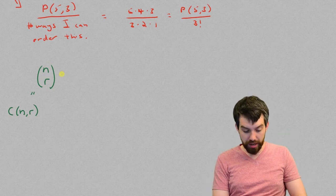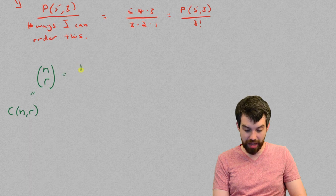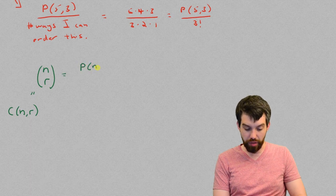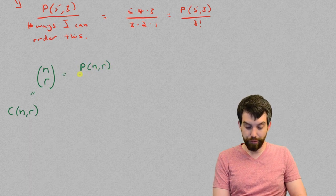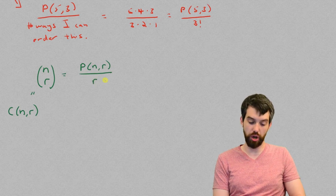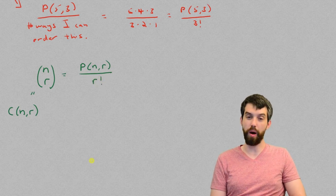And effectively what it is going to be defined as is the way that I pick from n things r things divided out by the number of ways that I can rearrange, and so r factorial on the bottom.